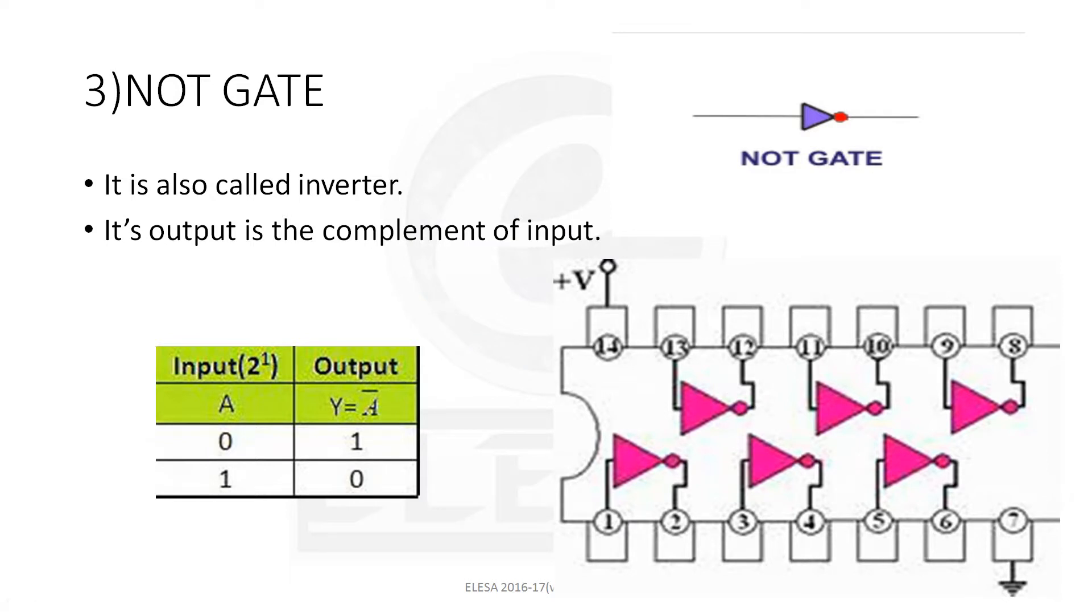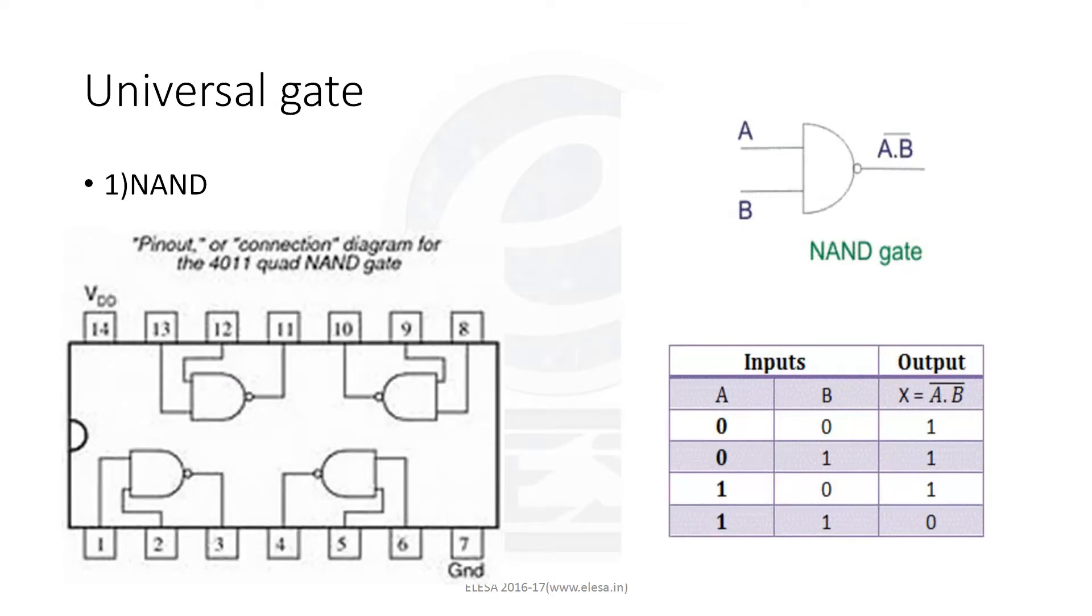By using these, we can make any circuit. Now, there are also two more important gates: NAND and NOR gate. These gates are also called universal gates. Because, either by using NAND or NOR, we can implement the basic three gates that we have already seen, that is AND, OR, and NOT gate.